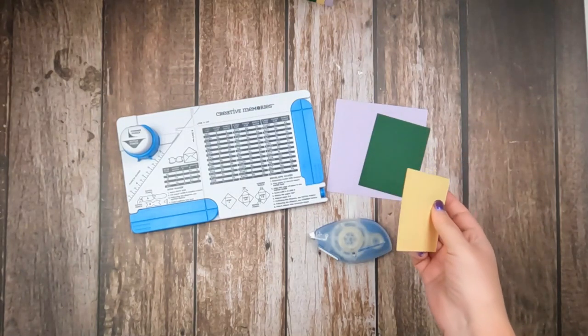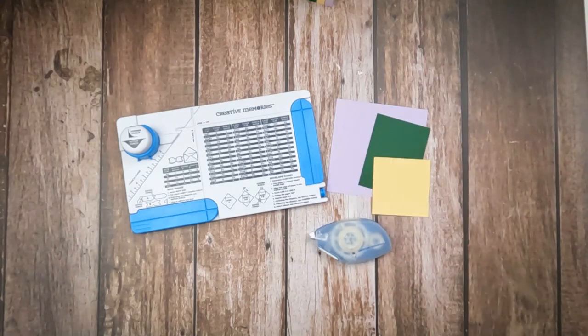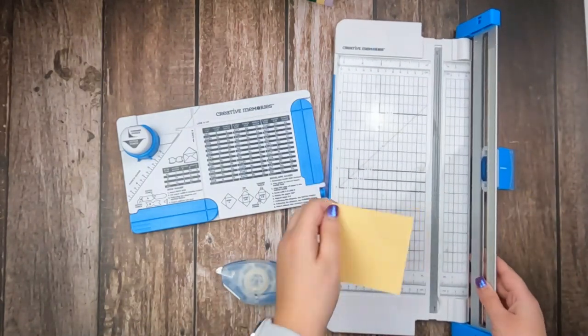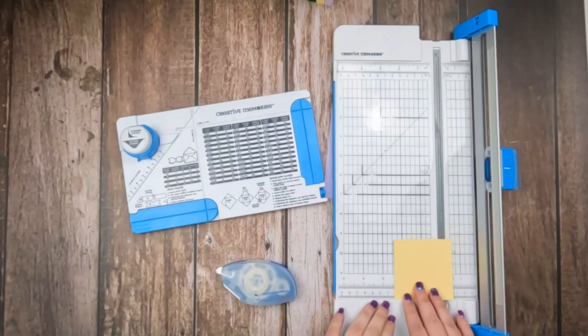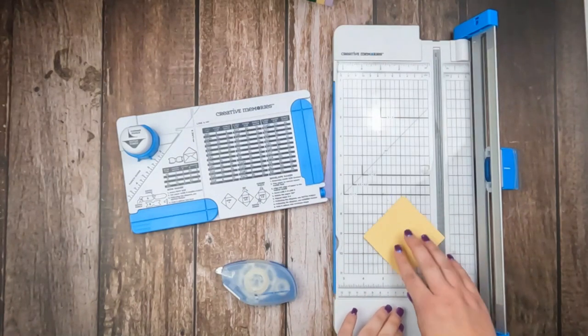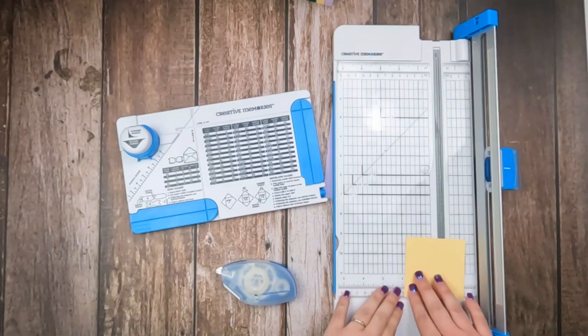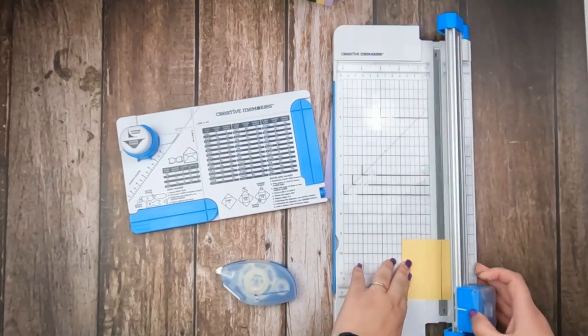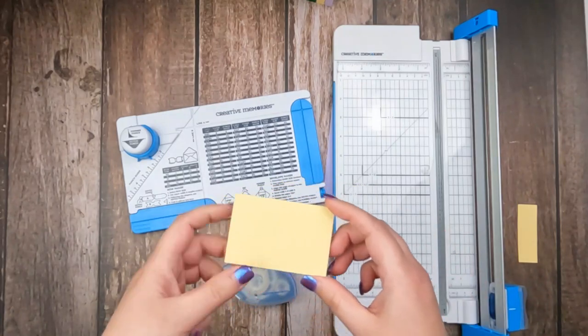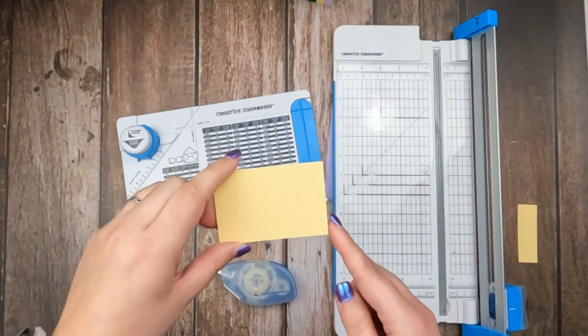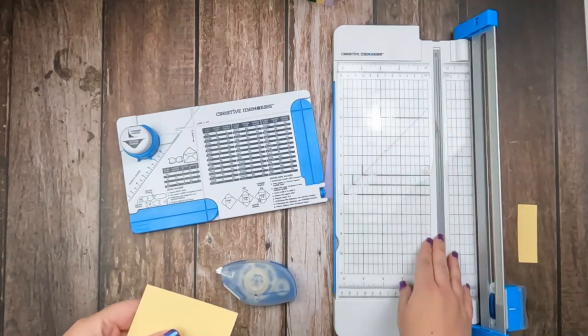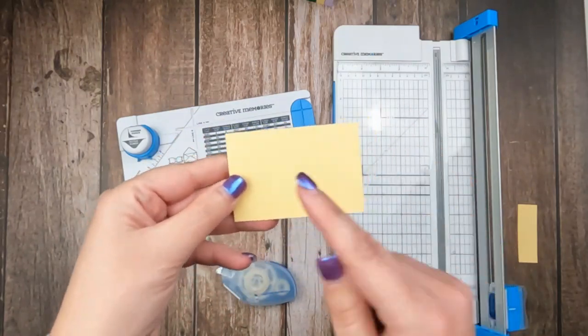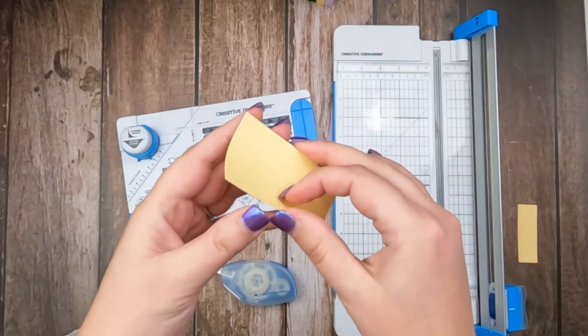So the first thing we're going to need is a sheet of paper that is three inches by two inches. So I'm just going to pull out my trimmer here. I believe this is a three inch square. So I just need to take one inch off one side.